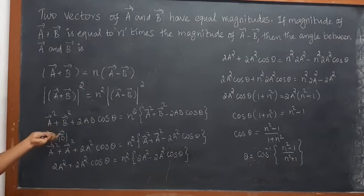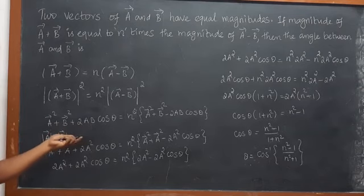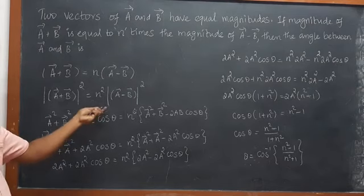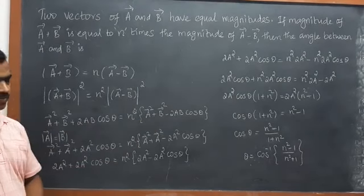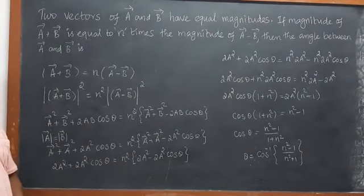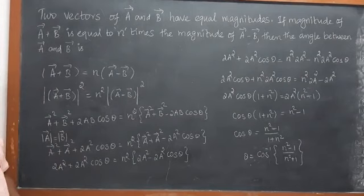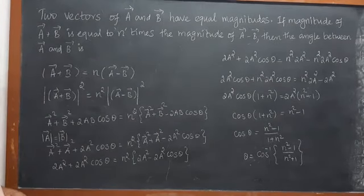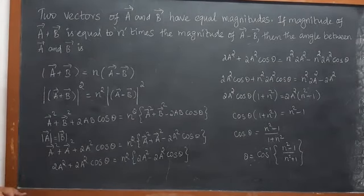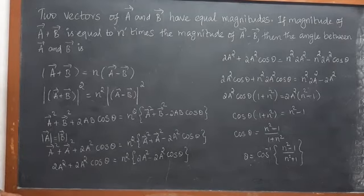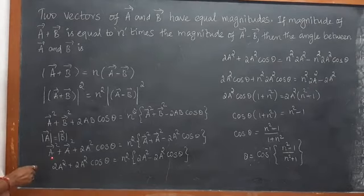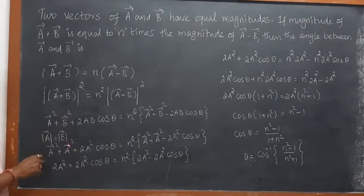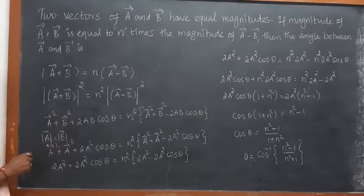So this step gives A squared plus B squared plus 2AB cosθ, and on the right side we have n squared times A squared plus B squared minus 2AB cosθ. And since the given vectors A and B have equal magnitudes, I have taken A equal to B. So instead of B squared, I can write A squared.